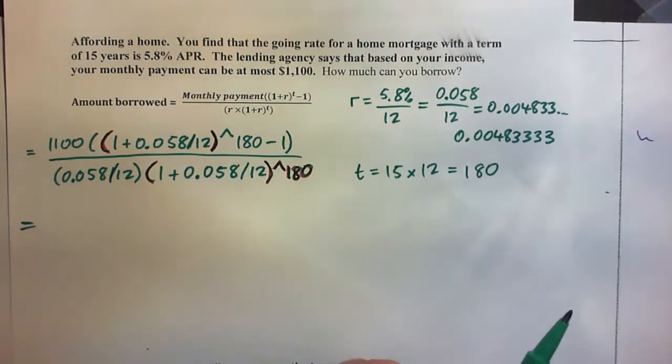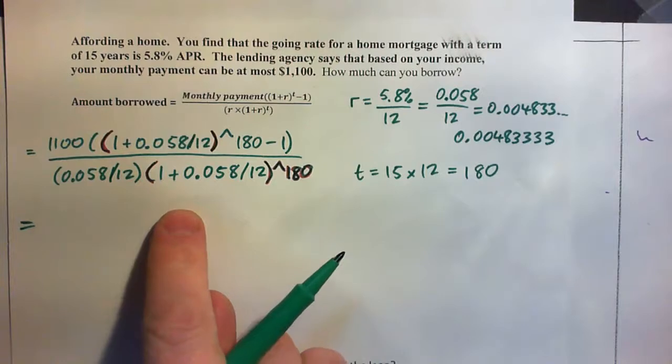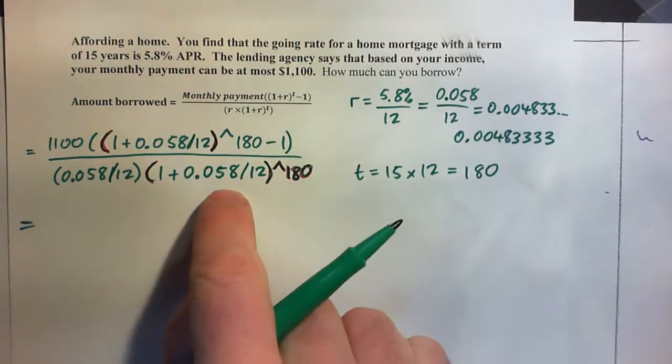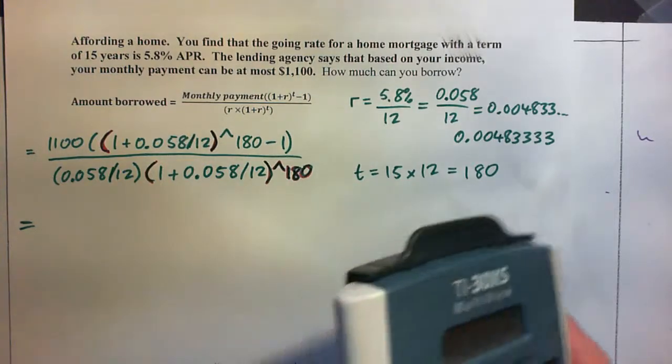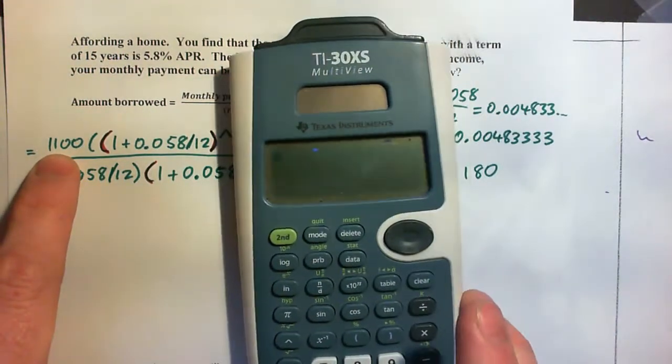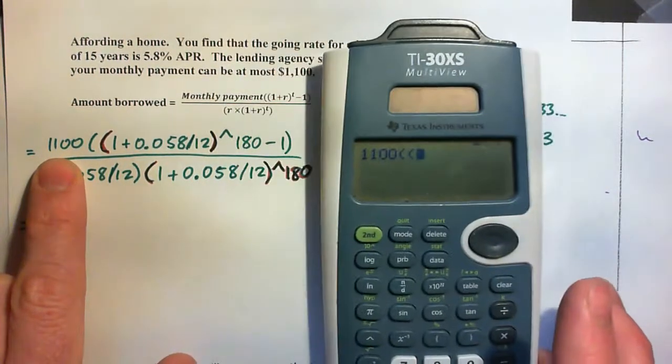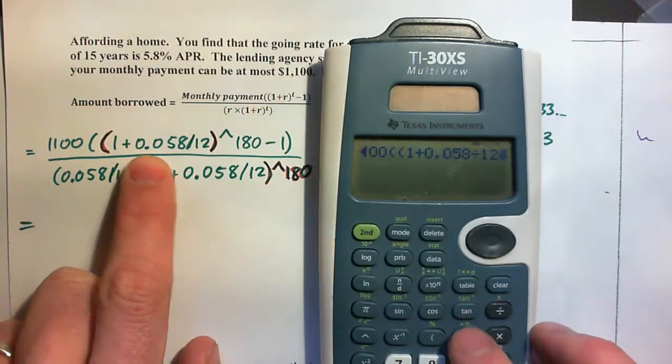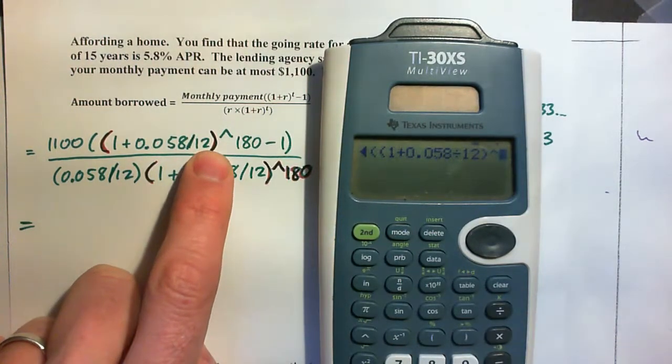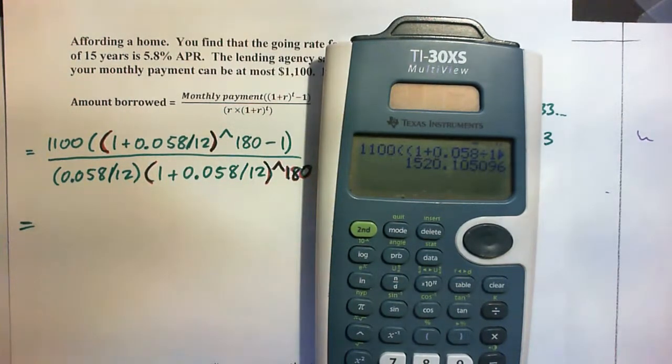So I could do an entire one line calculator entry, just do this whole thing over this whole thing. But why not at least calculate top and bottom and then divide. But we could do all of this divide it by all of this in one line calculator entry. Basically the top of the fraction is just going to look like that in a calculator: 1100, parenthesis, 1 plus 0.058 over 12, parenthesis, exponent 180, subtract one, close parenthesis, press enter. So that's the top.